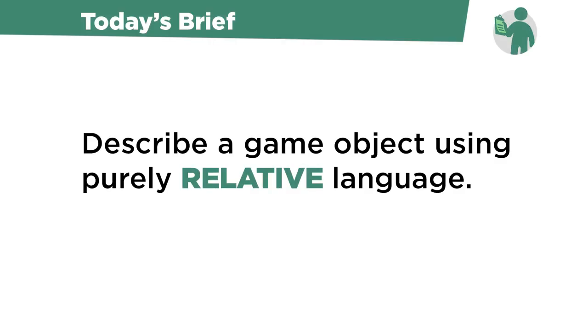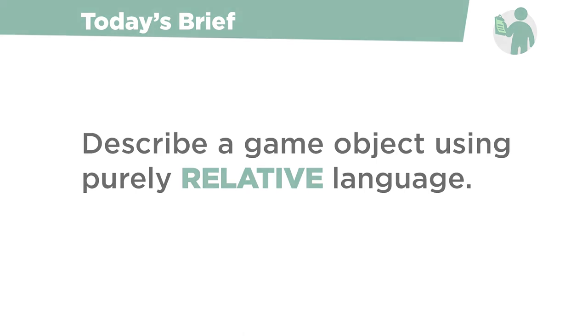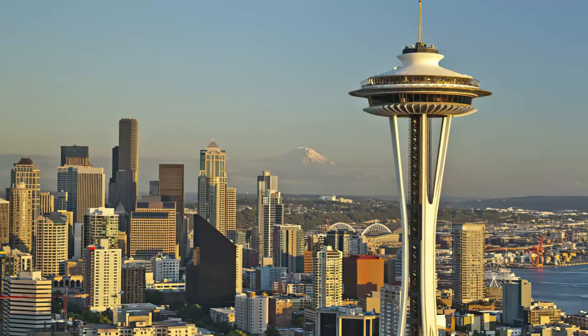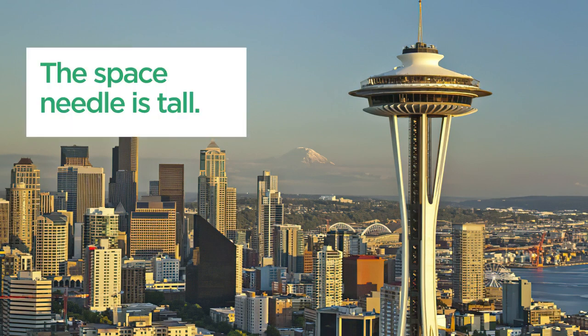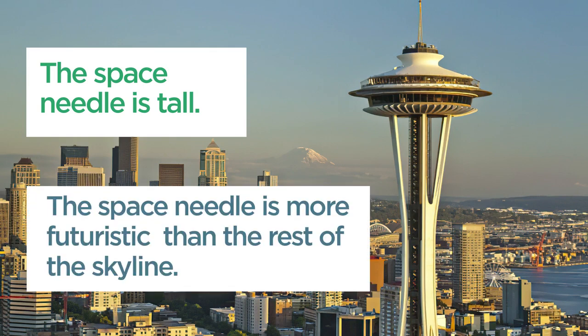Today's brief is to describe a game object using purely relative language. To give an example — I'm from Seattle — let me describe the Space Needle in two different ways. One would be to say the Space Needle is tall. Another way would be to say that the Space Needle is more futuristic than the rest of the skyline.